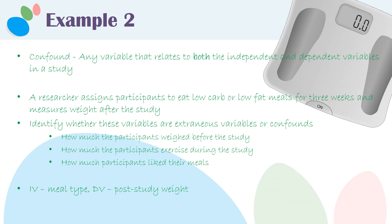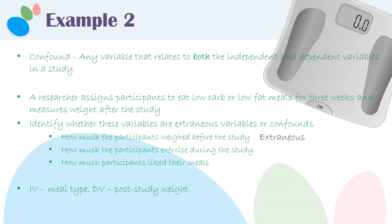The independent variable is meal type and the dependent variable is post-study weight. Does this first item relate to meal type and post-study weight? How much participants weighed before the study probably doesn't relate to their randomly assigned meal type, but it surely does relate to their post-study weight. So this is an extraneous variable, not a confound.